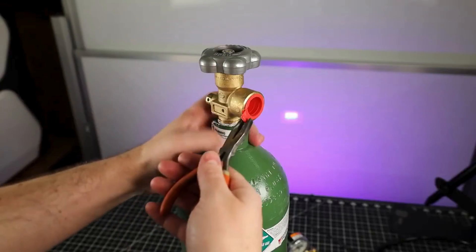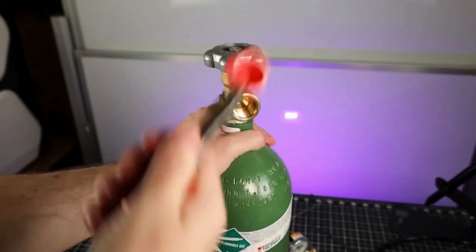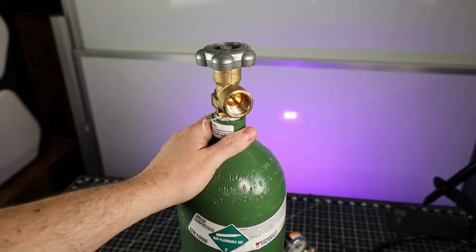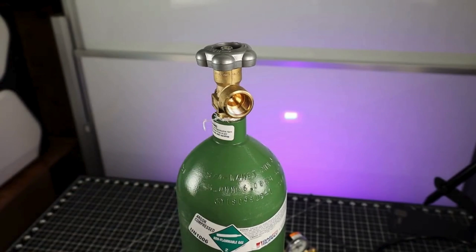Set up the argon part of this. With new canisters like this one, they usually have a plug in it that needs to be removed. Just using a pair of pliers to pull on the tab will usually make quick work of this.